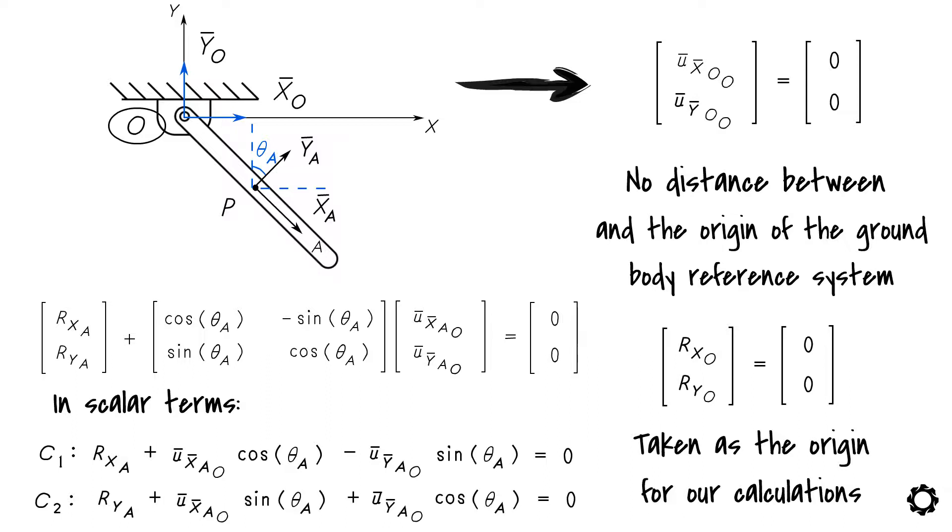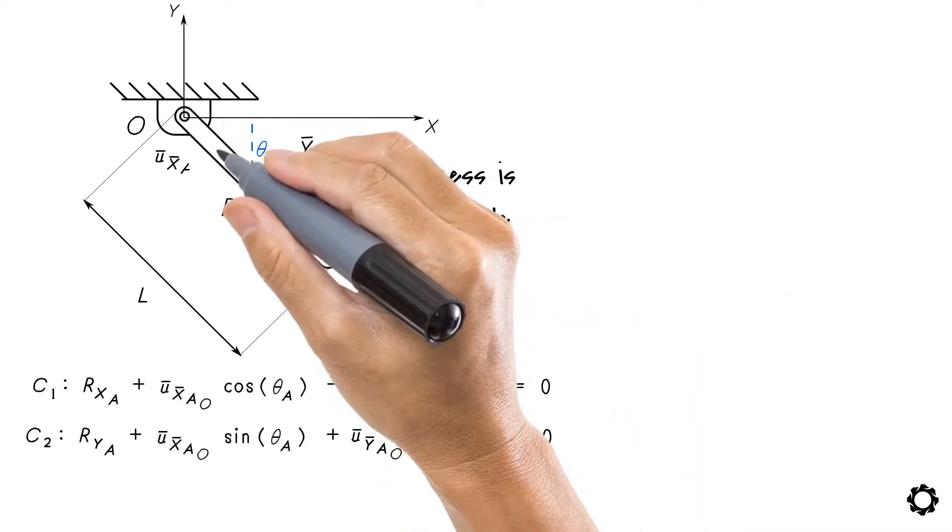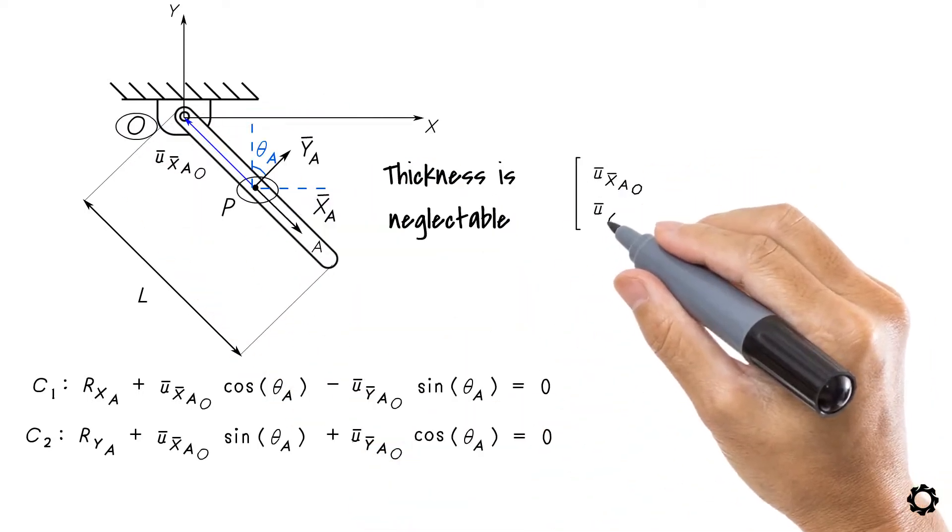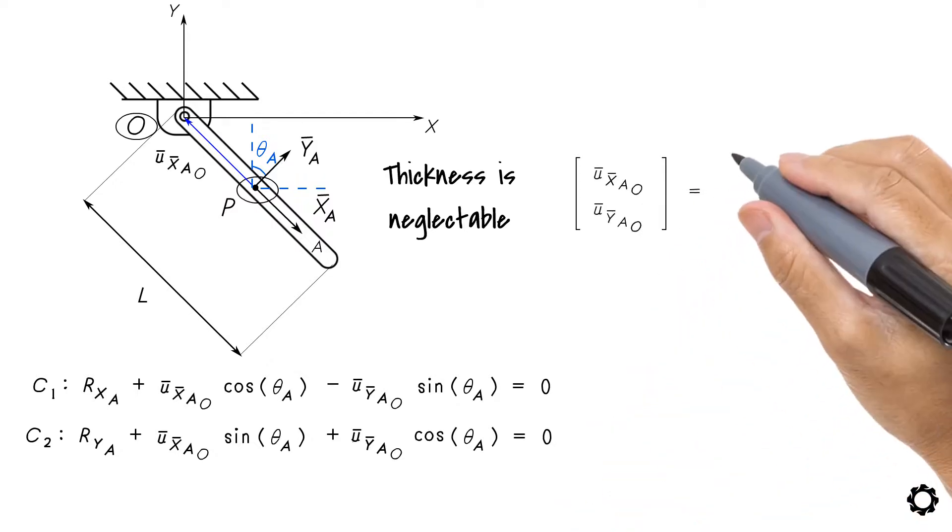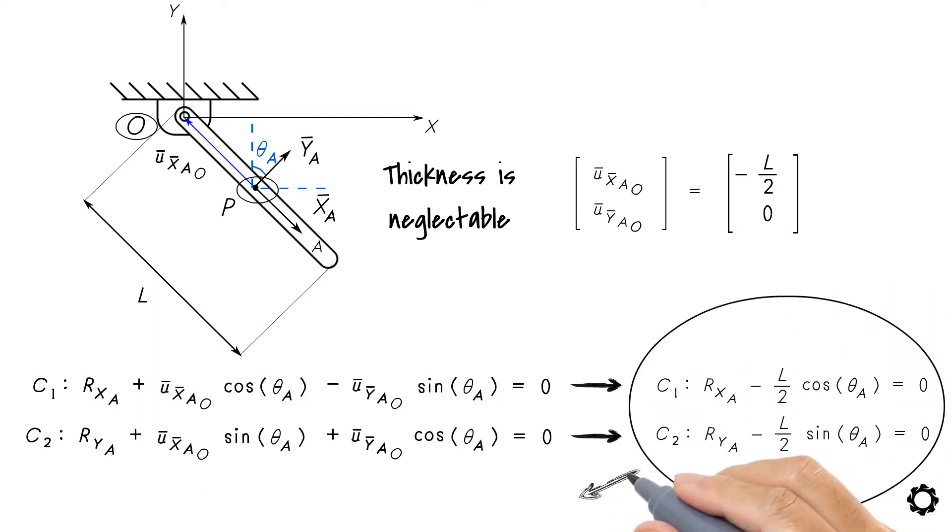To make things more practical, if we say that the length of the pendulum bar is L and the thickness is negligible, then we could write these equations using the body position vector of point O with respect to P as [U_bar_X_AO, U_bar_Y_AO] equals [-L/2, 0]. Then we end up with the following final constraints: C1 is Rx_A minus (L/2)cos(theta_A) equals zero. C2 is Ry_A minus (L/2)sin(theta_A) equals zero. Now you can verify that the resultant coordinates are functions of the pendulum's generalized coordinates, as stated before.